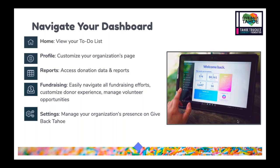Profile allows you to customize your organization page, add a thermometer, and make any necessary edits on your profile page. Reports gives you access to donor data as well as the ability to download donation reports. You can also manage recurring donations and offline donations through this section. Fundraising allows you to review and manage all fundraising efforts, customize your donor experience, and manage all of your volunteer opportunities. The settings section allows you to manage your organization's presence on GiveBackTahoe by adding in your social sharing information, customizing your URL, or adding EFT information.